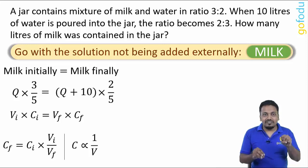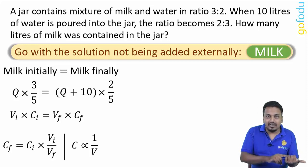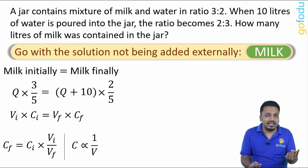Inversely proportional means when milk quantity is constant and water is added, then because of addition of water, volume of mixture increases and proportion of milk decreases.